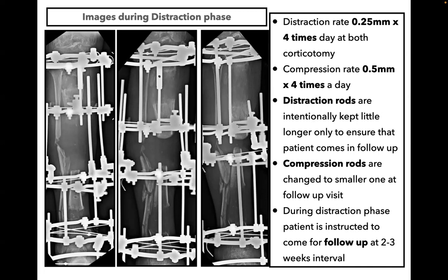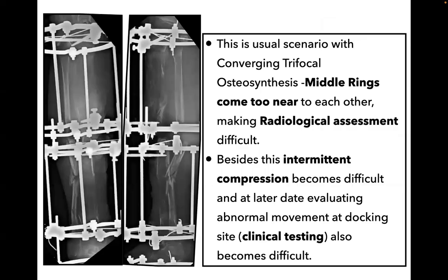Distraction rods at both corticotomy sites are intentionally kept a little longer to ensure the patient comes in for follow-up. Compression rods are changed to smaller ones at each follow-up visit. During the distraction phase, the patient is instructed to come for follow-up at two to three week intervals. Once the fragments reach towards each other, the middle ring comes too near — this is a common scenario with converging trifocal osteosynthesis. In such a situation, making a radiological assessment of union at the docking site is very difficult, and performing intermittent compression at the docking site would also be difficult. Evaluating abnormal movement at the docking site clinically is also a technically demanding procedure.